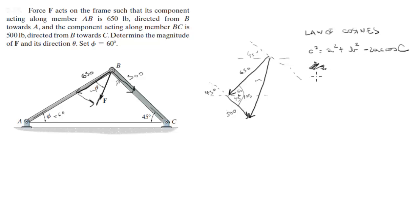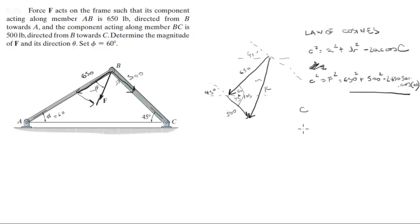Plugging in the numbers: F² = 650² + 500² − 2 × 650 × 500 × cos(105°). When you solve for F, remember to take the square root. F is equal to 916.91 pounds.